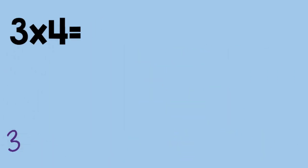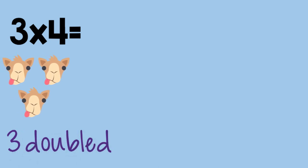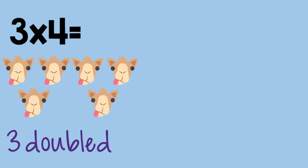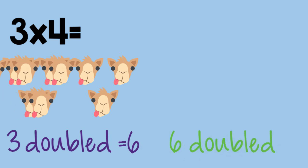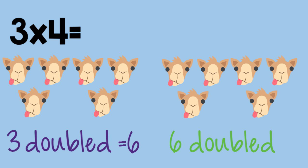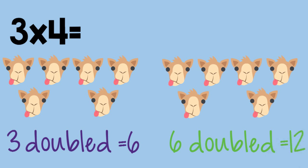Three times four. Three, doubled, is six. Six, doubled, is twelve. So three times four equals twelve.